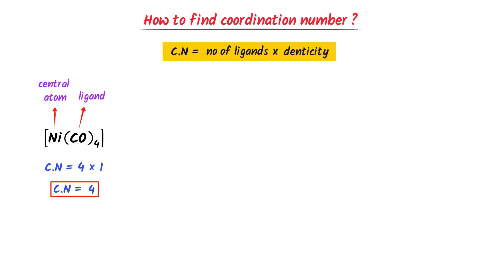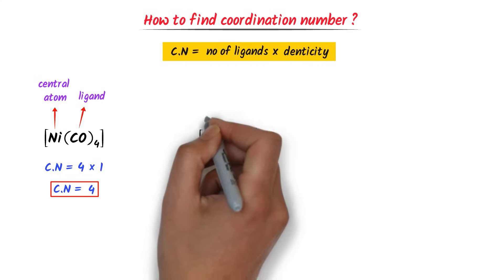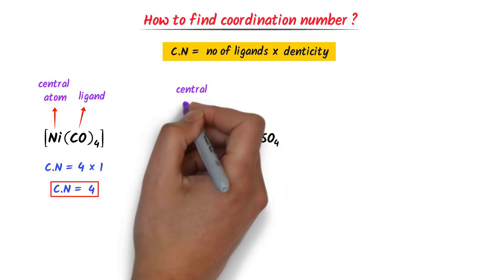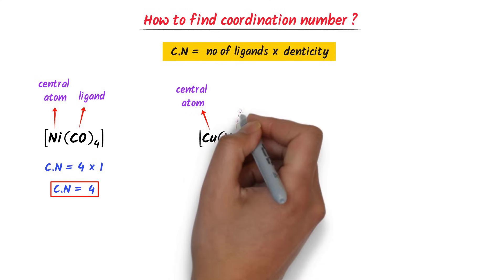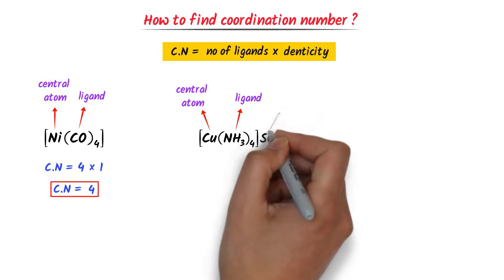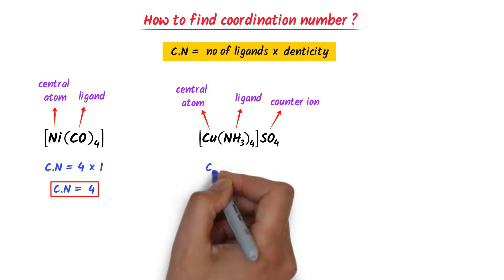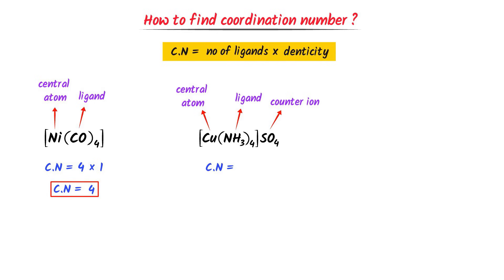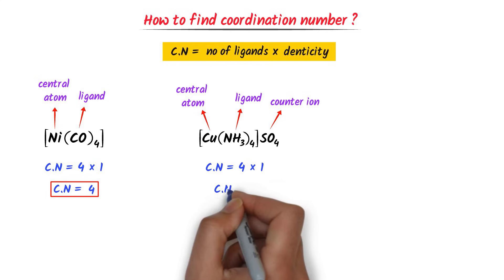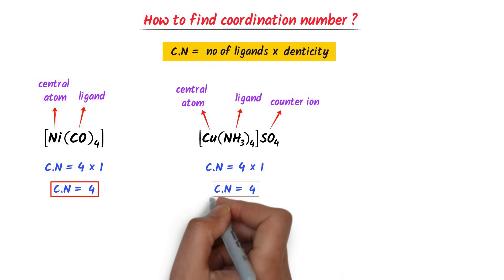Consider the second complex compound. The central metal atom is copper, the ligand is NH3, and SO4 is a counter ion. The coordination number equals the number of NH3 ligands (four) multiplied by the denticity of NH3 (one), so the coordination number is four.